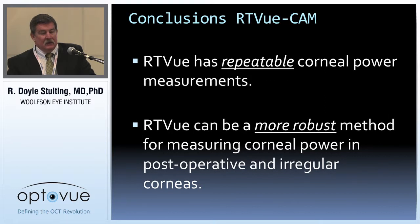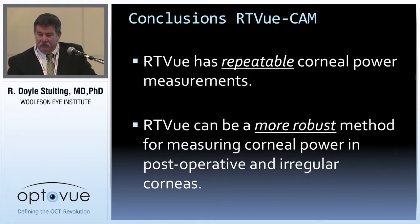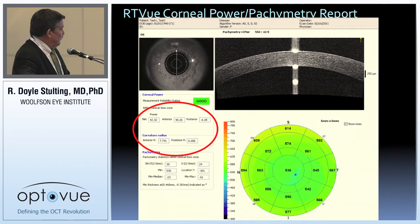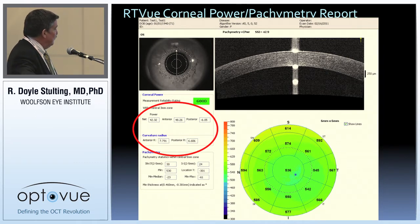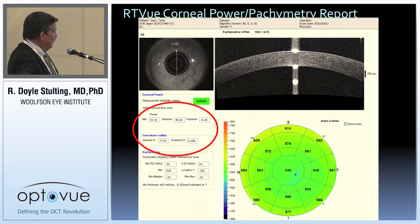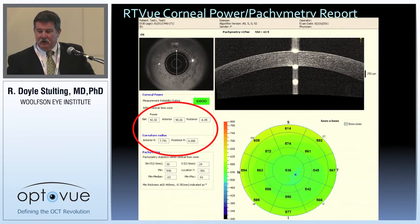The OCT can also measure corneal powers across corneas with irregular astigmatism. Here is the pachymetry report, and here is the anterior and posterior corneal power within the central three millimeters.